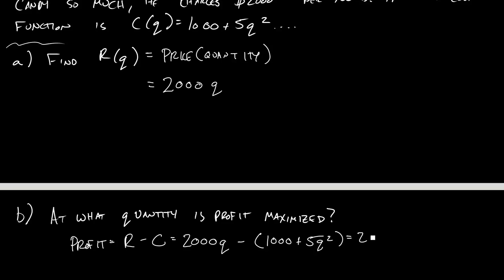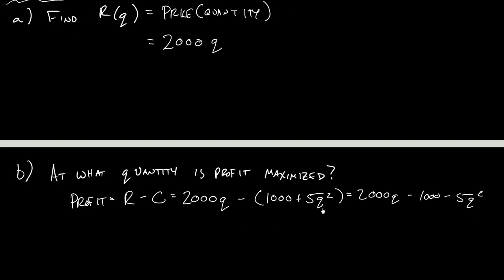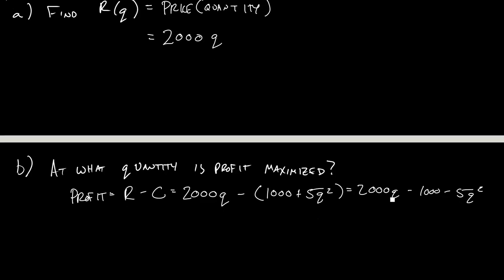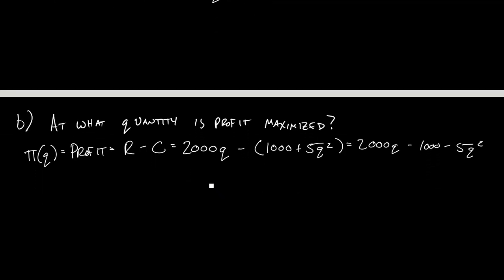Now, if I simplify this a little bit more, we'd have 2,000Q minus 1,000 minus 5Q squared. I need to maximize this thing. And so what do we have right now? We have a function where if I plug in Q on this side, I'm going to get a profit out over here. So if I plug in Q equals 10, the number I get will tell me how much profit I get when I'm making 10 pounds of rock candy. If I want to maximize that profit, I want to take the derivative of profit and set it equal to 0.